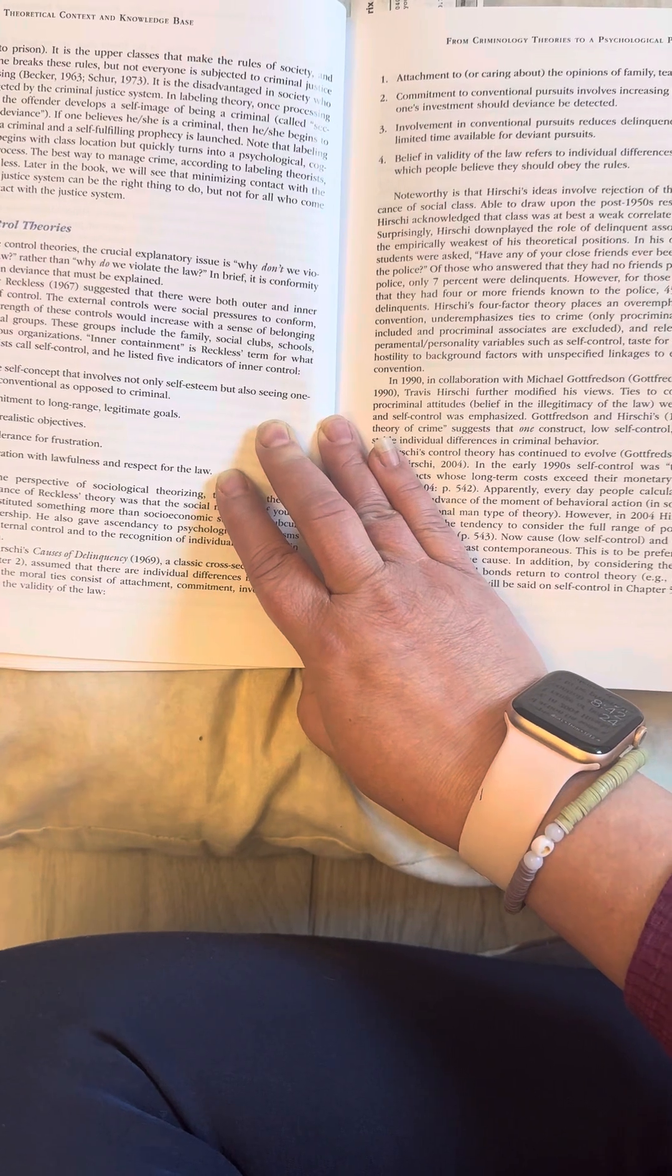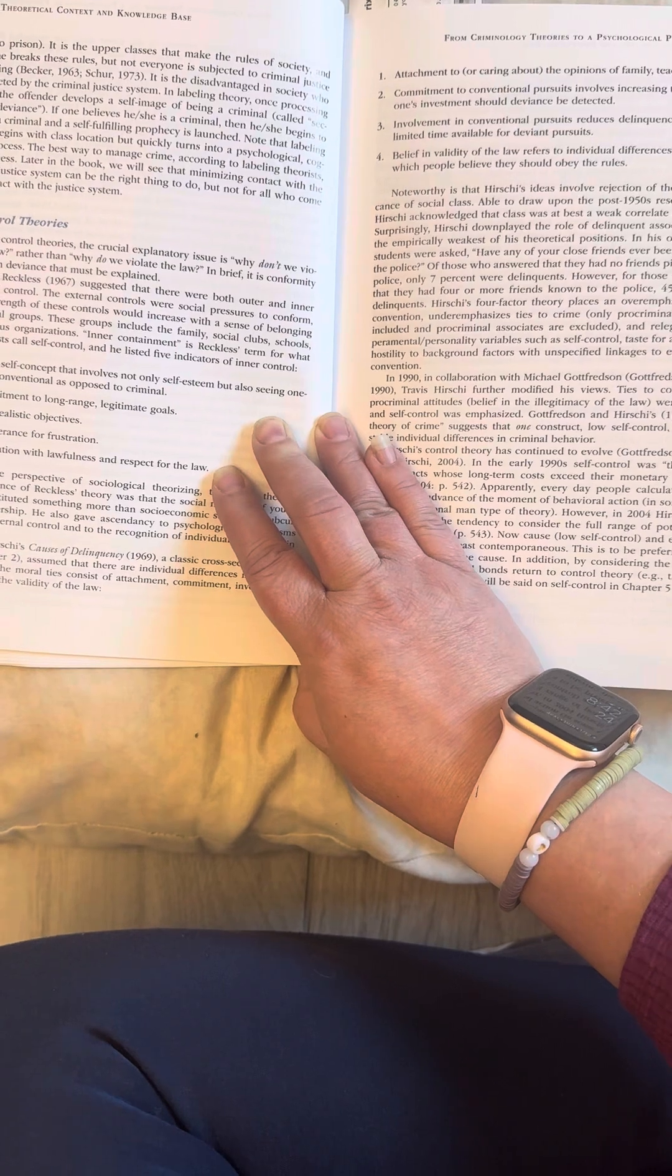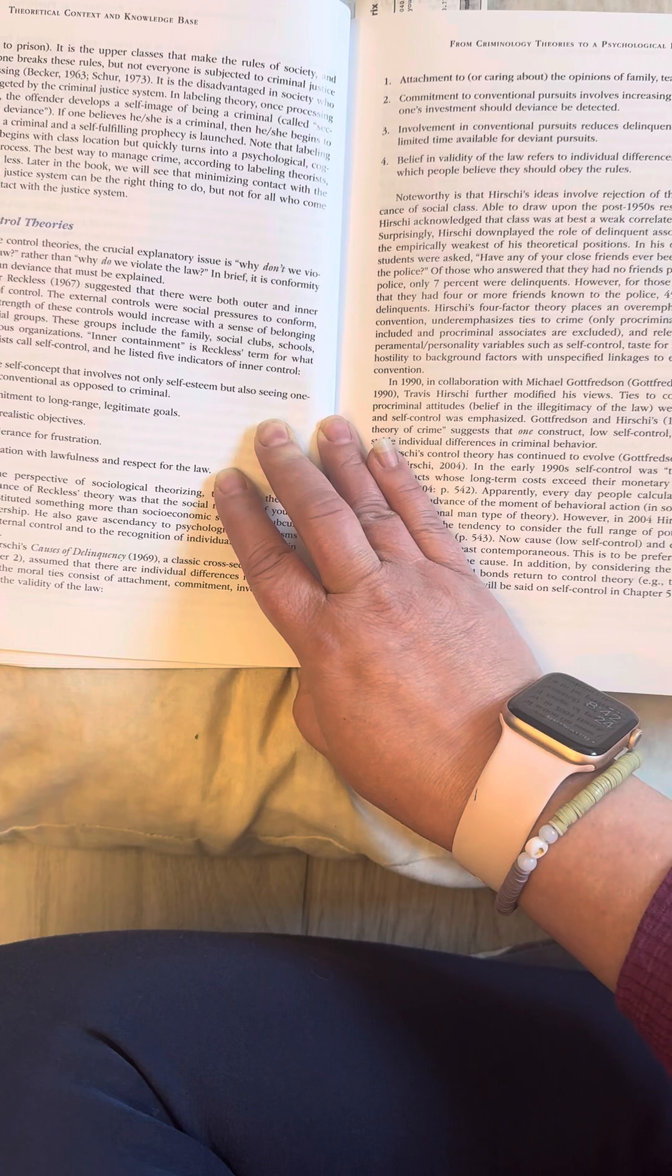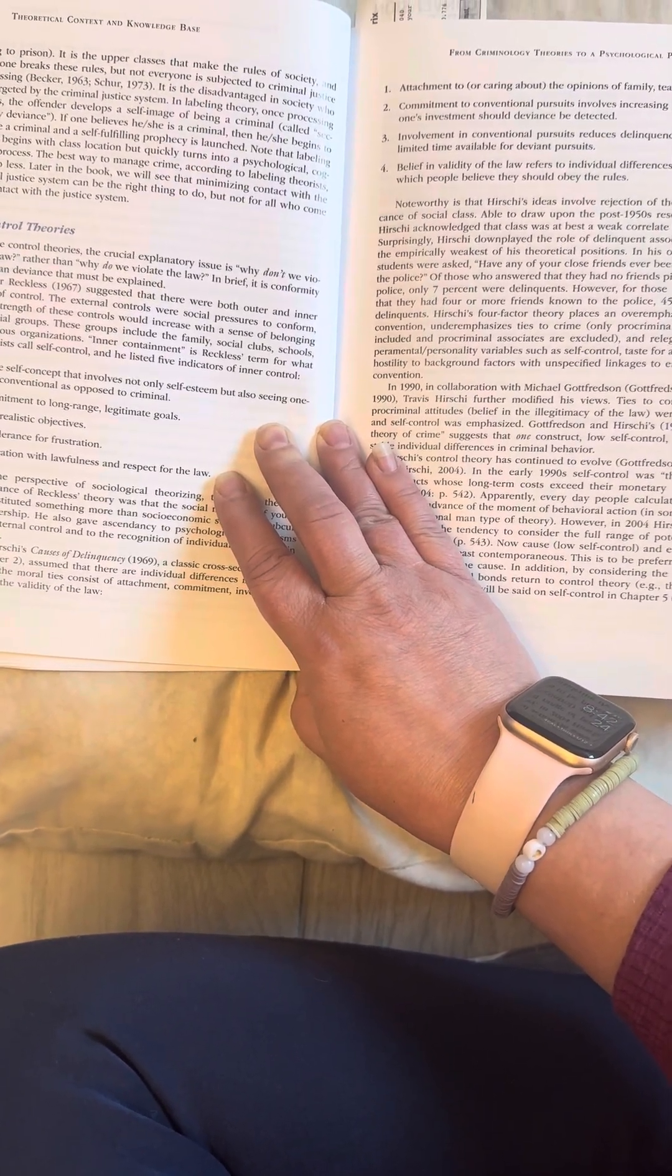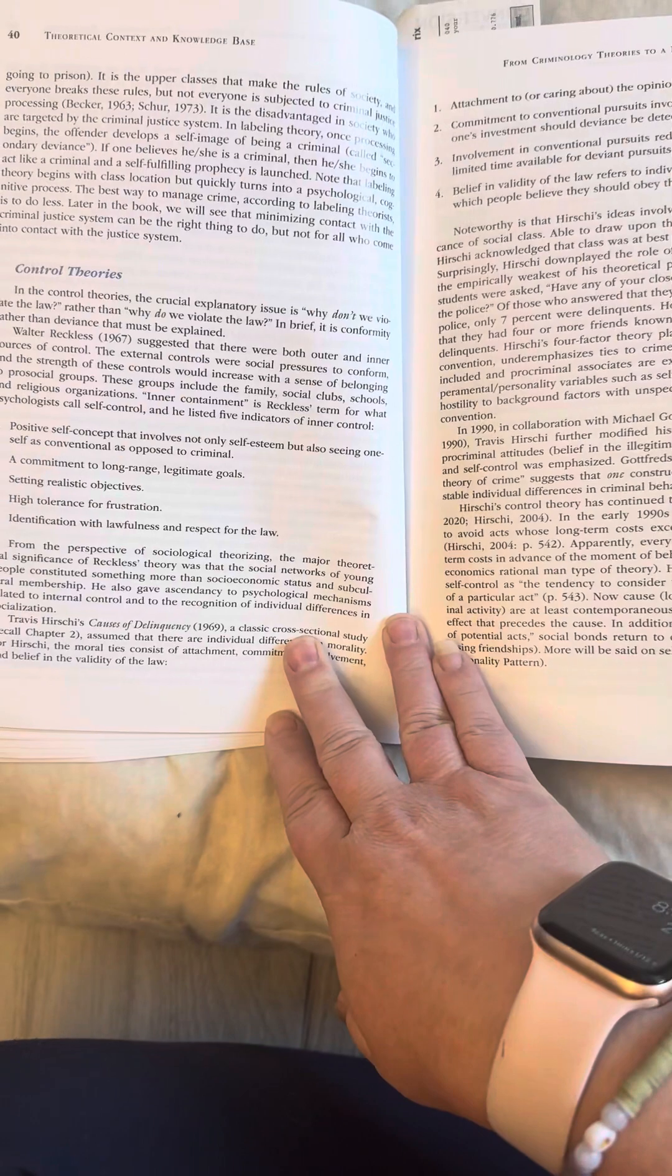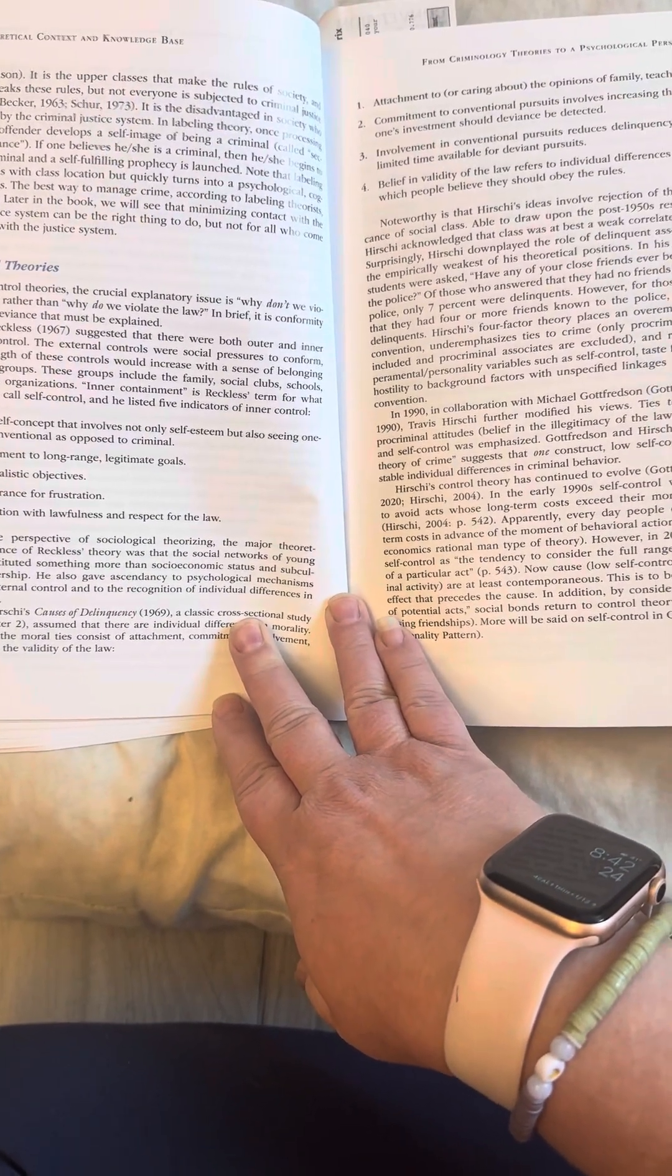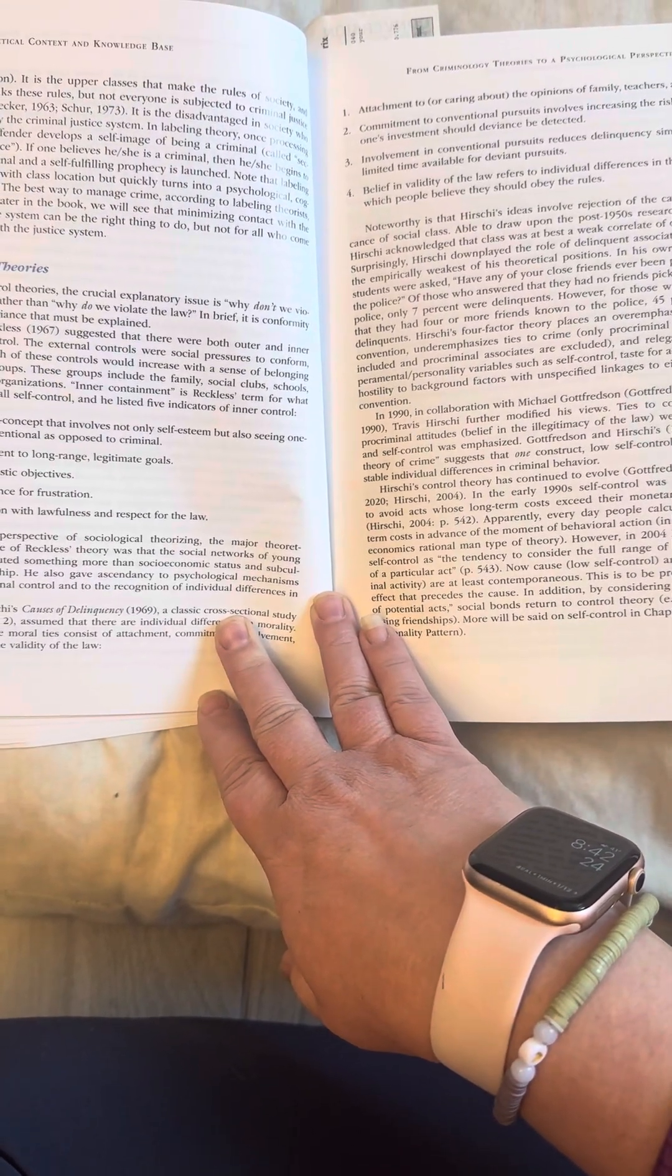The best way to manage crime, according to labeling theorists, is to do less. Later in the book, we will see that minimizing contact with the criminal justice system can be the right thing to do, but not for all who come into contact with the justice system. In the control theories, the crucial explanatory issue is why don't we violate the law, rather than why do we violate the law. In brief, it is conformity rather than deviance that must be explained.